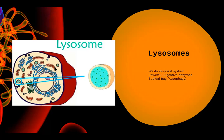Just like a worn-out cell organelle stops functioning properly, the cell itself can at times get worn out or stop functioning properly or get damaged. In such a condition, how will the cell go to any waste disposal system when the waste disposal system is inside the cell? The solution lies in the lysosome itself. When the complete cell is worn out or not working properly, the lysosome bursts open. When it bursts, the powerful digestive enzymes inside are released throughout the whole cell and digest the entire cell.